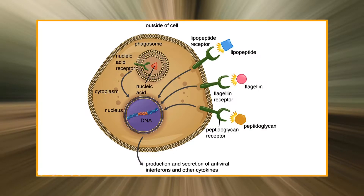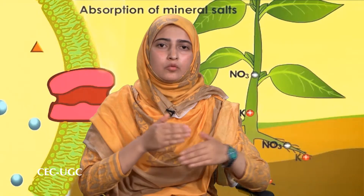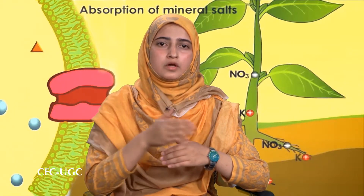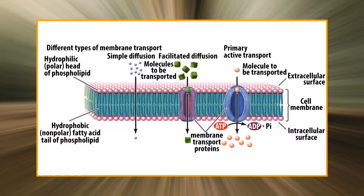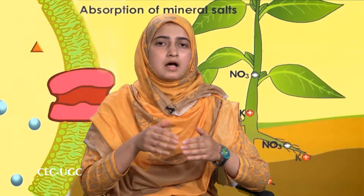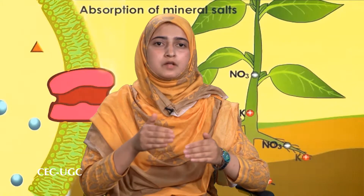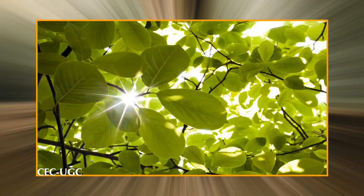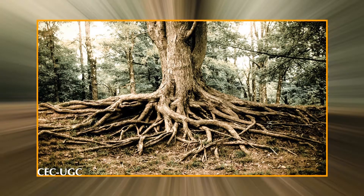Often these signal transduction processes are mediated by changes in ion fluxes across the membrane. Movement of molecules and ions from one location to another is known as transport. Local transport of solutes into or within cells is regulated mainly by membranes. Larger scale transport between plant and environment or between leaves and roots is also controlled by membrane transport at the cellular level.